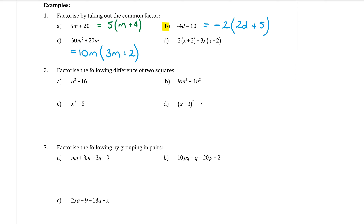Part d involves taking out a common factor where the common factor is a whole bracket — (x + 2). Bring (x + 2) out the front and open a bracket. From the first term, dividing out (x + 2) leaves a 2; from the second term it leaves 3x. So the answer is (x + 2)(2 + 3x).